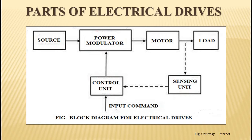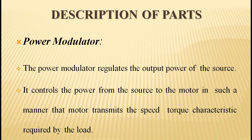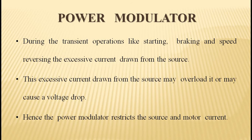Let's go through the important points from this diagram. First, the power modulator. The power modulator regulates the output power of a source. It controls the power from the source to the motor in such a manner that the motor transmits the speed or torque characteristics required by the load. During transient operations like starting, braking, and speed reversing, excessive current may be drawn from the source.